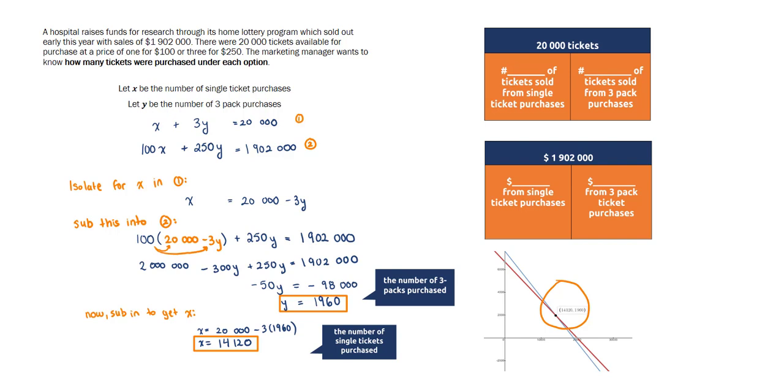The question was asking how many tickets were purchased under each option. We have that 14,120 of the tickets sold were from single ticket purchases, and three times 1,960, or 5,880 of the tickets, were sold from the three-pack purchases.